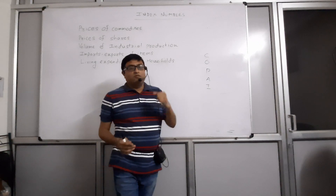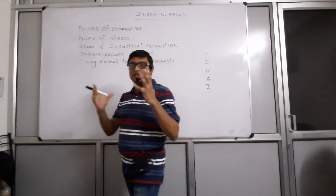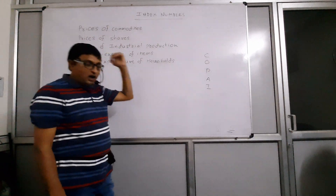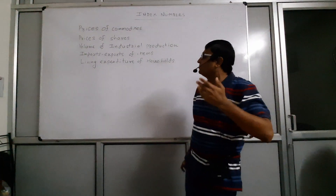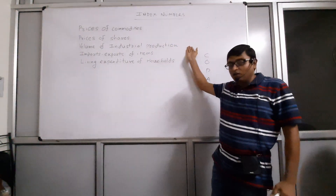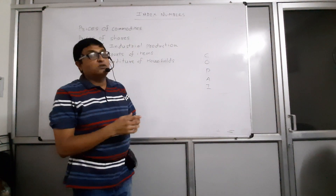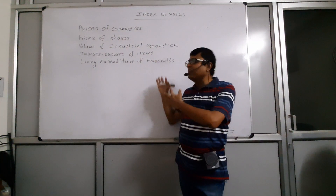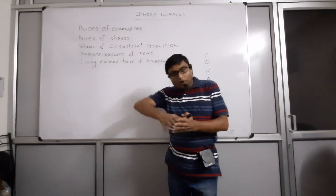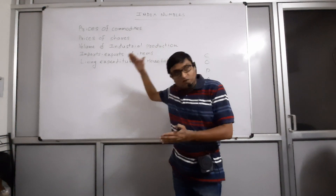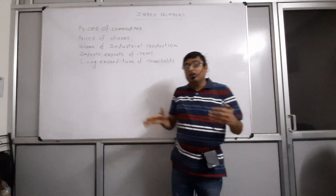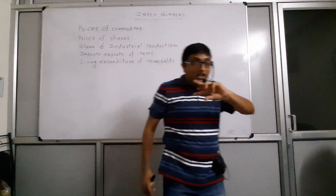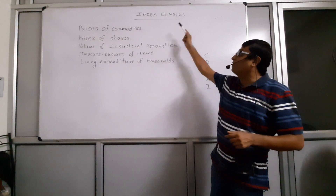We are starting with the current scenario or routine activity that we have seen. Over the period of time, we know prices of commodities are getting continuously changed — prices of shares, volume of industrial production or agricultural production, import, exports of the country, or the living expenditure of the household. These are different variables which keep on continuously changing. So what has changed from one particular point of time to another can be studied, and such changes can be measured with the help of index numbers.